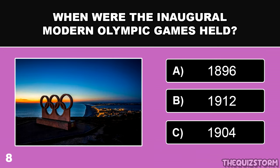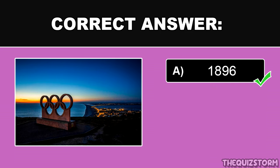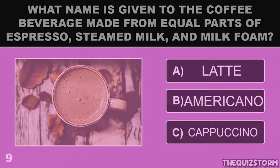When were the inaugural modern Olympic games held? And the correct answer is 1896.